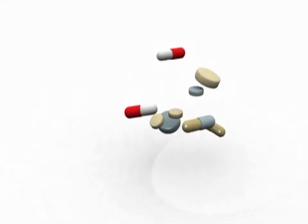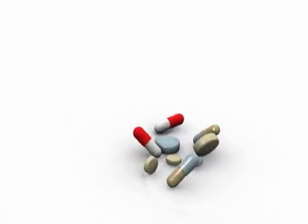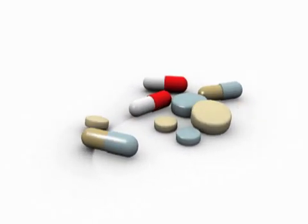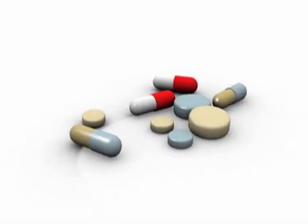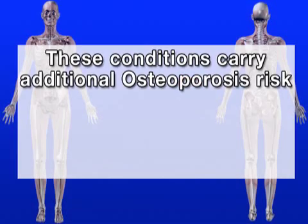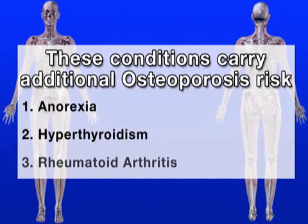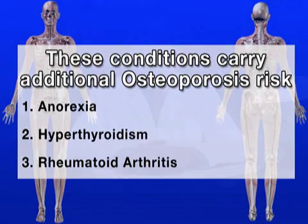Certain medications like corticosteroids and chemotherapy drugs can also increase the risk of bone loss. Some medical conditions like anorexia, hyperthyroidism, and rheumatoid arthritis all create an increased risk of developing osteoporosis as well.